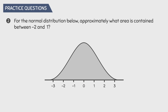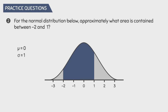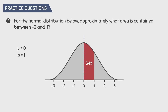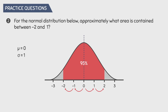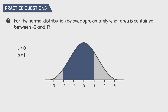Question 2: For the normal distribution below, approximately what area is contained between negative 2 and 1? We have mu = 0 because 0 is in the center, and sigma = 1 because each interval goes up by 1. We divide the area into two parts: from 0 to 1, we know one standard deviation gives 68%, and half of this is 34%. From 0 to negative 2, two standard deviations gives 95%, and half of this is 47.5%. Adding these two areas together gives a total area of 81.5%.